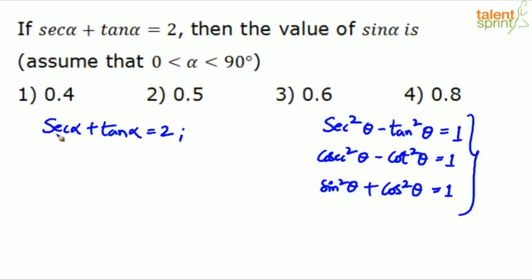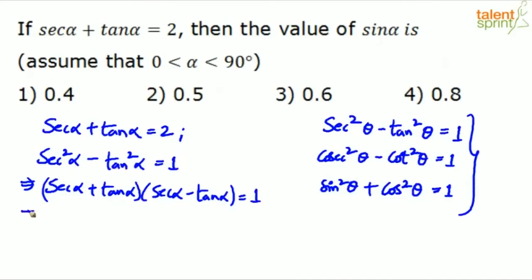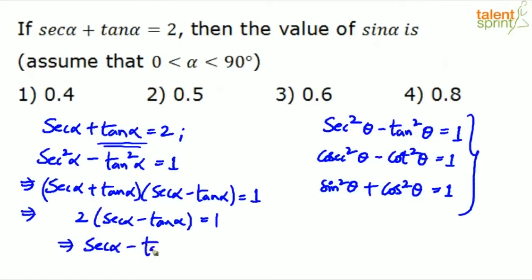He has given sec α + tan α = 2. We can write sec²α - tan²α = 1, which implies (sec α + tan α)(sec α - tan α) = 1 — that's the a² - b² = (a+b)(a-b) factorization. We already know sec α + tan α = 2, so substituting: 2 × (sec α - tan α) = 1.